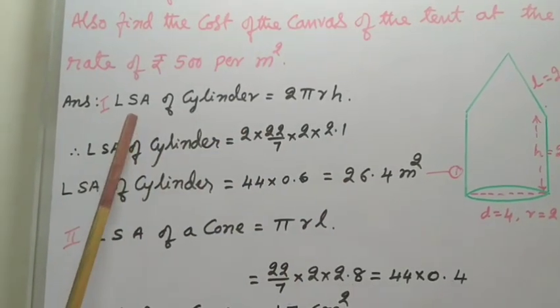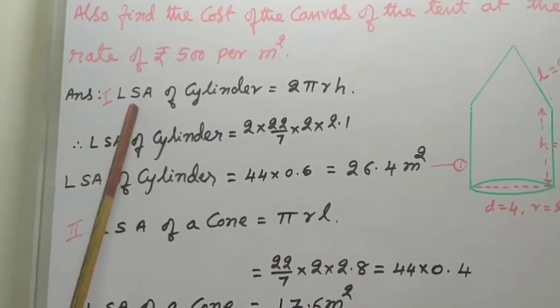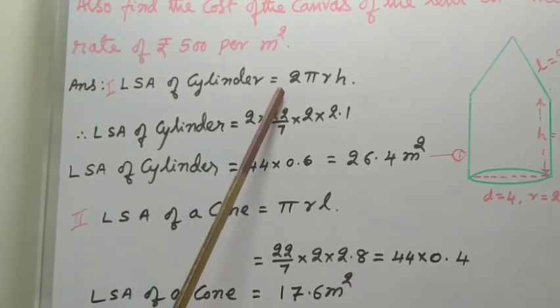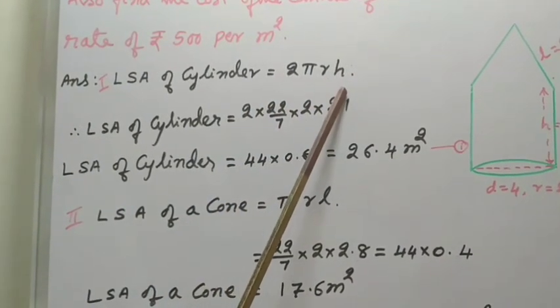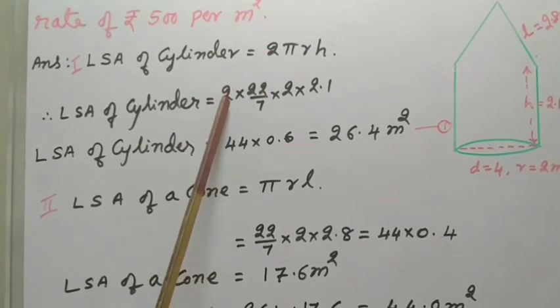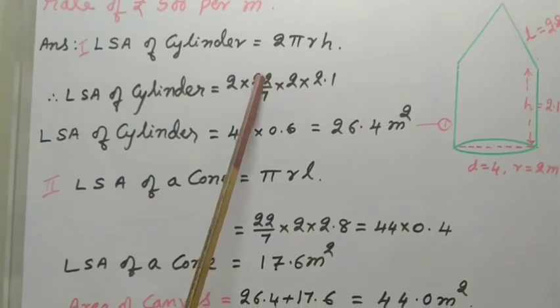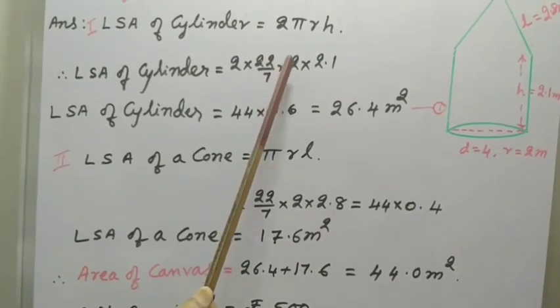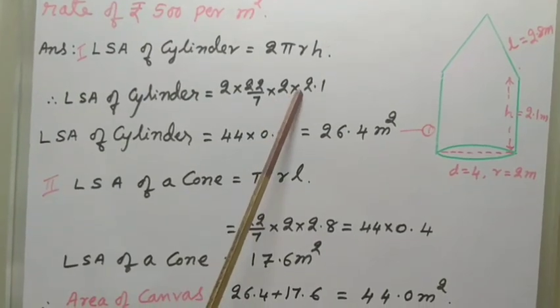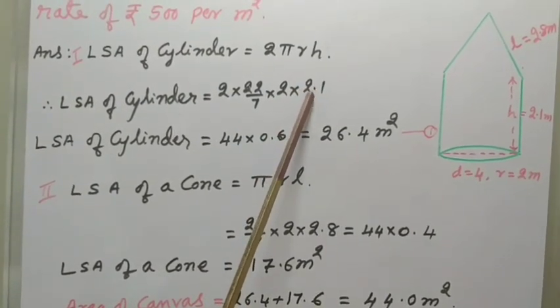So, now, first, LSA of cylinder, that is formula we know that, 2πRH. LSA of cylinder equal to 2 into 22 over 7 into R radius equal to 2m, this 2m into H 2.1.